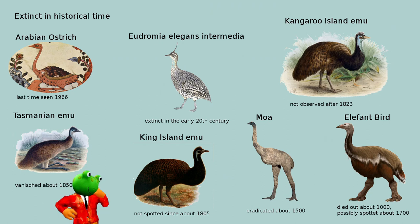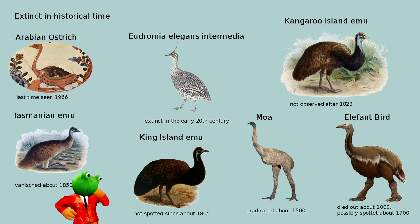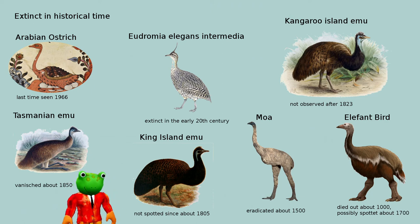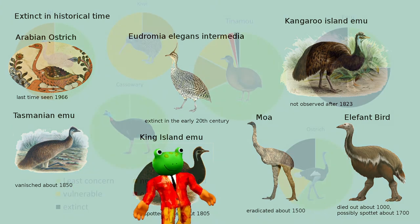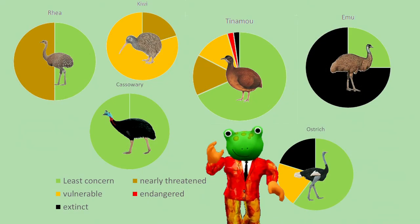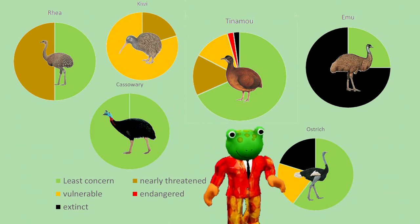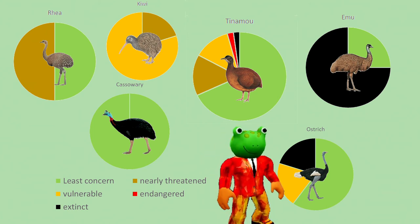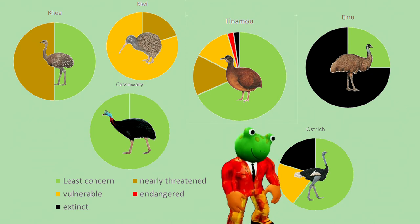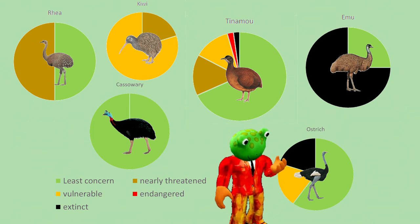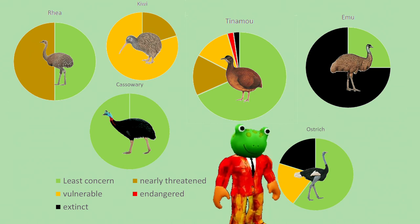Three local emu species vanished in the 19th century, and the last Arabian ostrich was seen in 1966, but this was a dead specimen. Moa and elephant birds were eradicated between the year 1000 and 1500. In summary, the worst situation is that of the Kiwi, followed by Rhea and Tinamu. The emu has the largest amount of extinct species but is not threatened at all — the emu is the only bird who won against humans in a war.